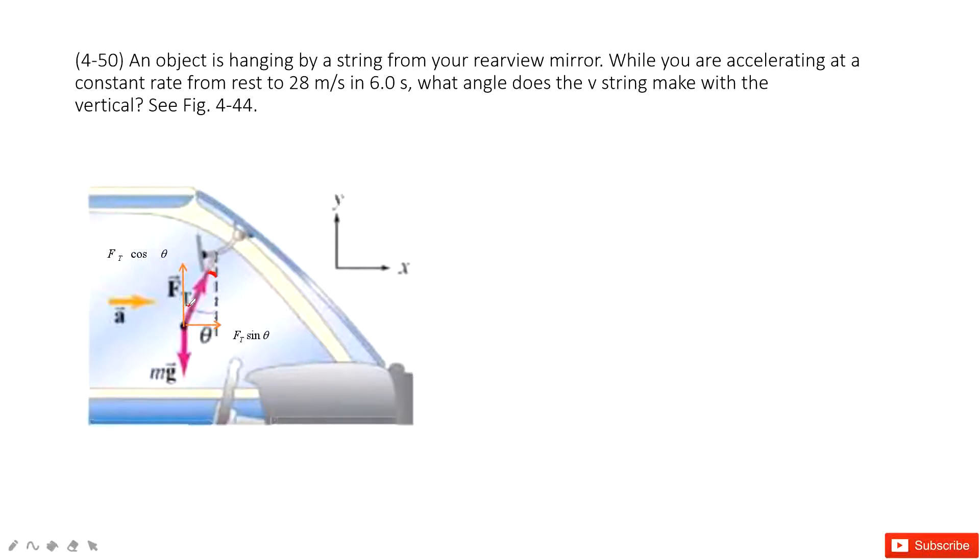So this angle must also be theta because this is two angles. These two angles, this one must be the same with this one. So this is also theta. And you can see this is F, this is theta. So this side must be cosine theta and this side sine theta. We agree?